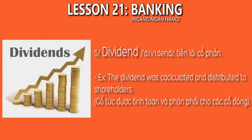5. Dividend. Từ này có nghĩa là lãi cổ phần. Ví dụ như là bạn có thể nhớ nó là cái tiền cổ tức, tiền lãi cổ phần này sẽ được tính toán và phối hợp với các cổ đông. Example: The dividend was calculated and distributed to shareholders.